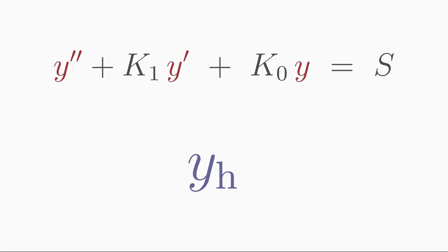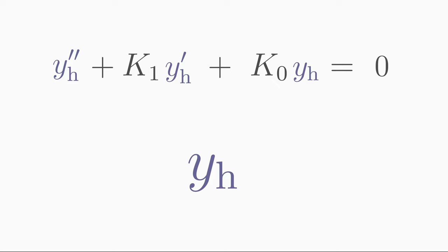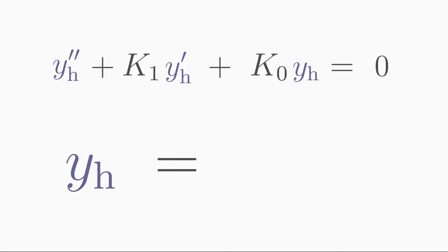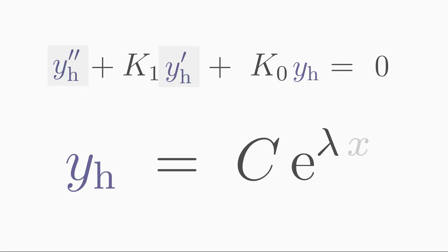The two parts are: a homogeneous solution yh of the homogeneous differential equation, and a particular solution yp. The homogeneous solution yh solves the differential equation if you set the perturbation function s equal to zero. In the method of the exponential ansatz, as the name suggests, we make the guess that the homogeneous solution yh has the form of an exponential function: yh equals c times e to the power of lambda times x.